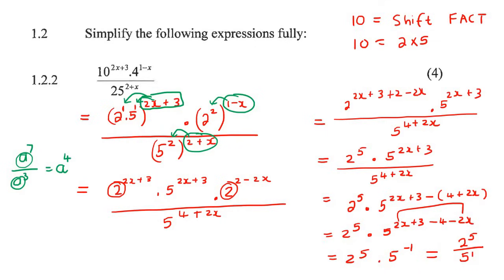And then we could work that out. So 2 to the 5 is 32. So sorry, I'm going to write the final answer here. The final answer then would then be 32 over 5.